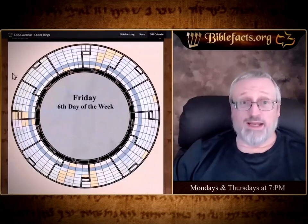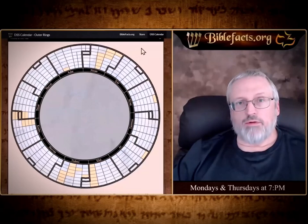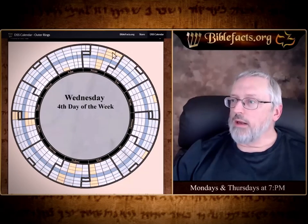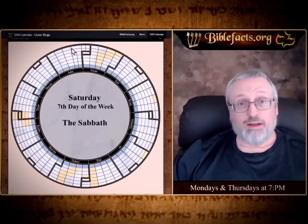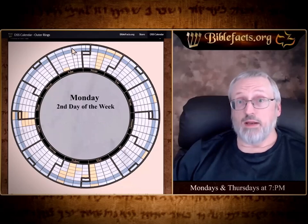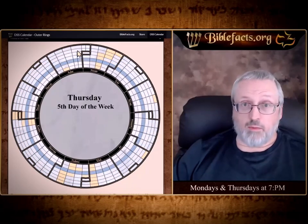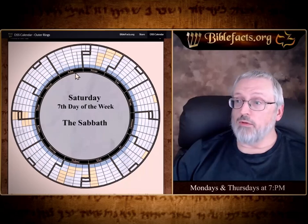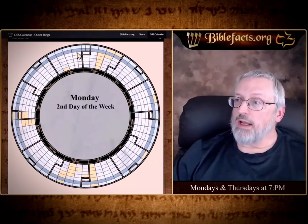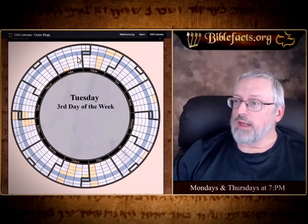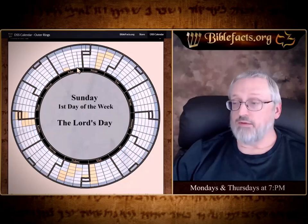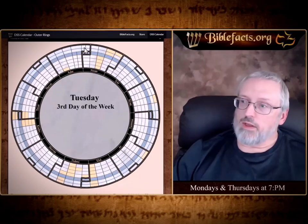Here's how the days work on the calendar: we don't go left to right or up to down, we go outer to inner. This outer ring is the first day of the week — the Lord's Day, Sunday. Yes, they had a Lord's Day back then. Then the second day, third — anciently it was just one through seven. Then Monday, Tuesday, Wednesday, Thursday, Friday, and then the Sabbath, Saturday, the seventh day.